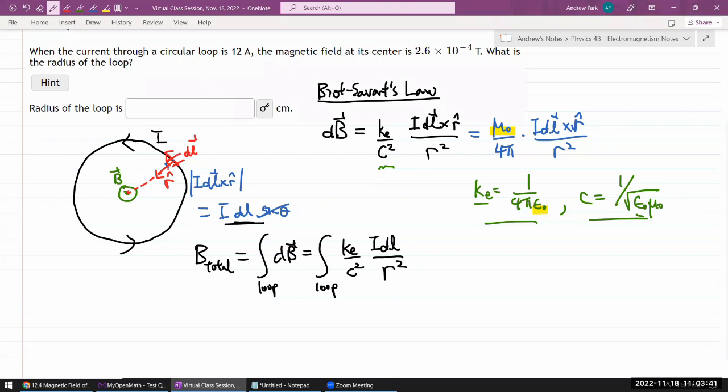Let me pull out everything that doesn't change as I integrate around the loop. Coulomb constant doesn't change, speed of light doesn't change, those are physical constants. Current doesn't change, it's the same current throughout. Now, one potentially surprising thing, this is R squared.